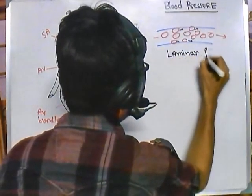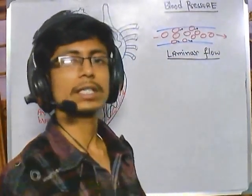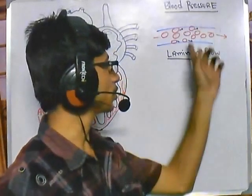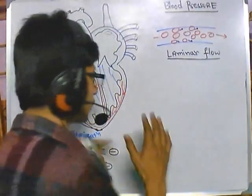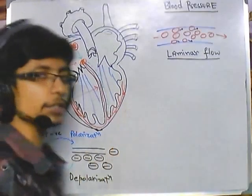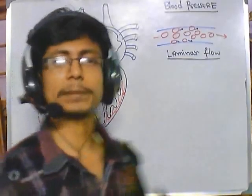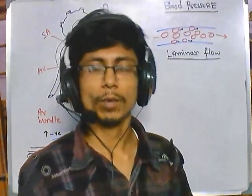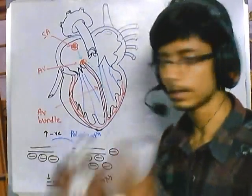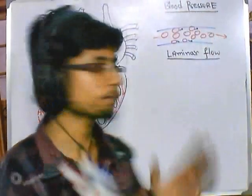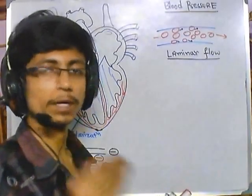Due to this laminar flow, many blood cells continuously create pressure onto the wall of our blood vessel, generating blood pressure. This pressure can be of two major types. When the ventricle constricts, a large amount of blood passes through the arteries to reach the body. When it pushes blood in huge amounts, it creates a high pressure of blood onto the wall of our blood vessels.